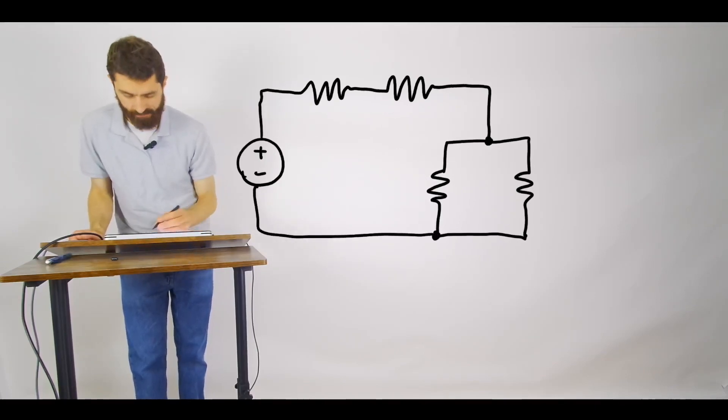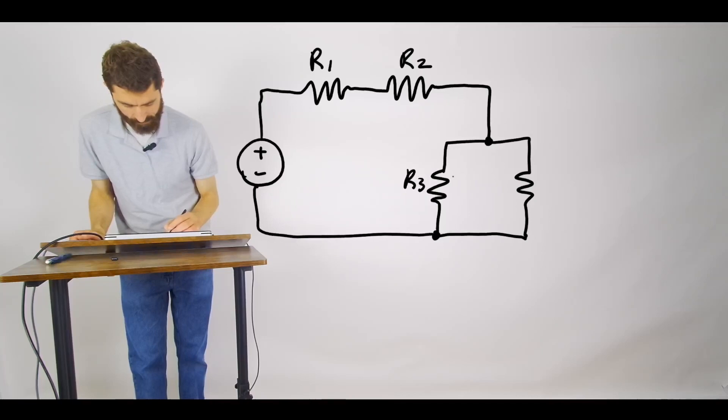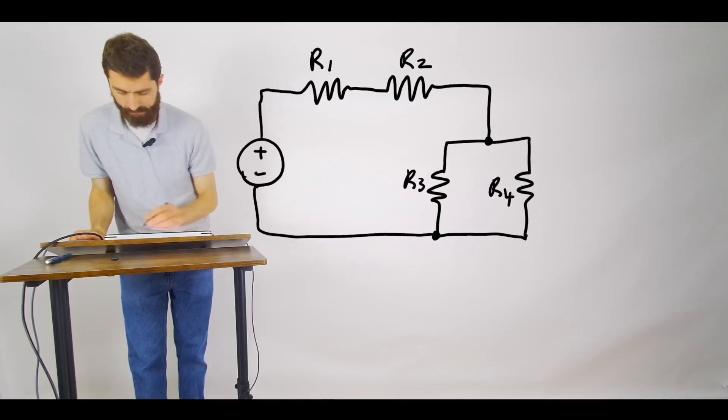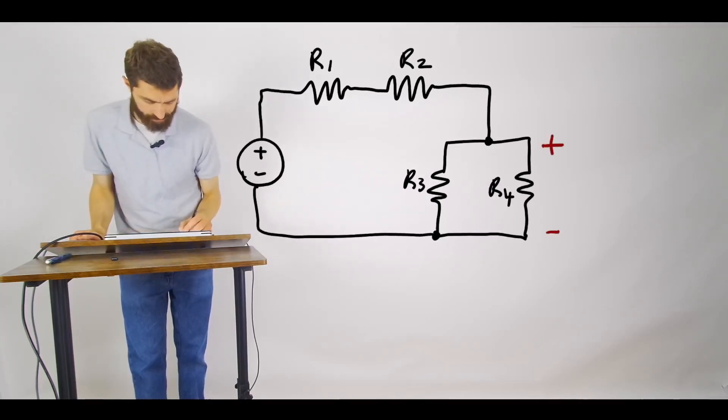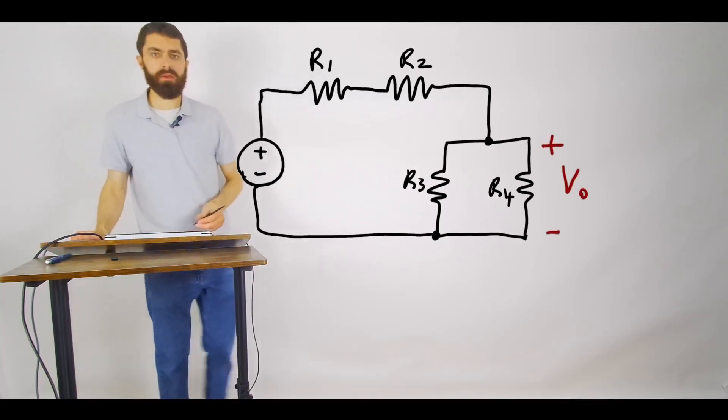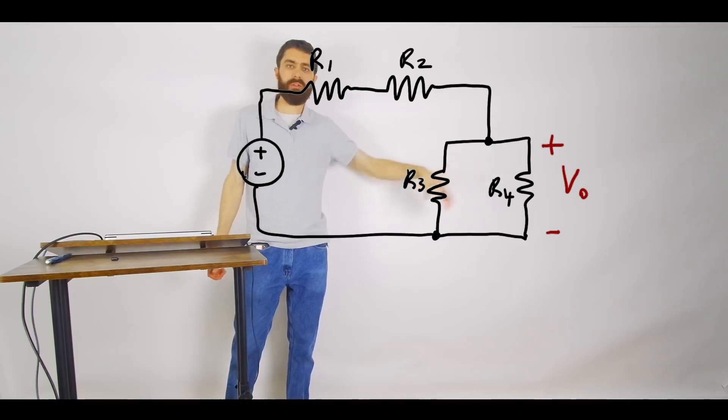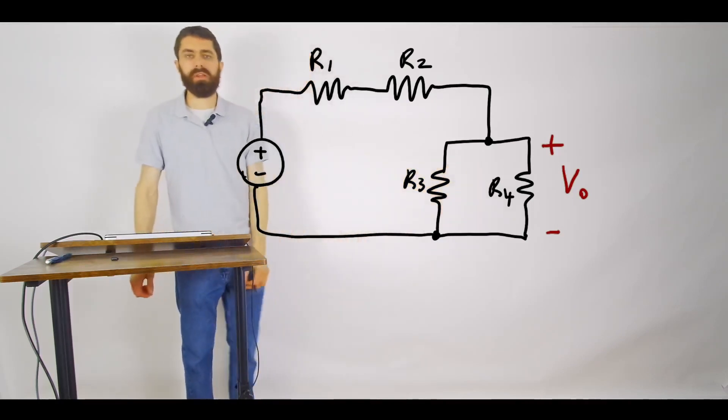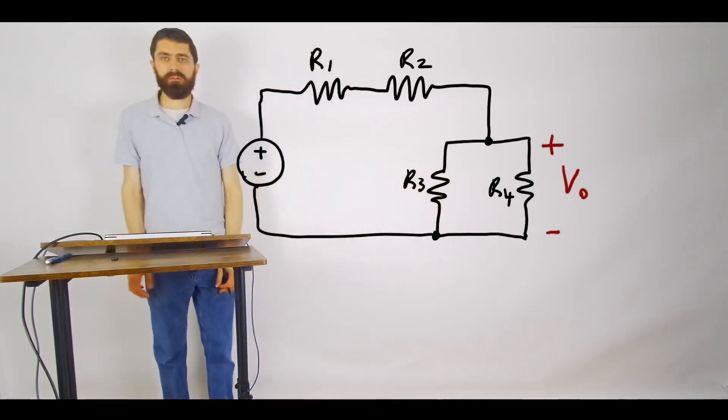So we can label this R1, R2, R3, and R4. And let's say the problem is we want to find this voltage, we'll call it V0, the voltage across this parallel combination of R3 and R4.